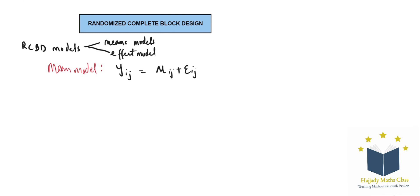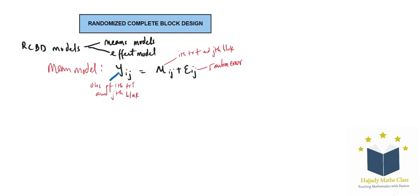So what does this represent? When we talk about μ_ij, this represents the observation of the i-th treatment and also the j-th block. So we need to take note of this j-th blocking. And e_ij is the random error. Note that i ranges from 1 to a, and j is from 1 to b.